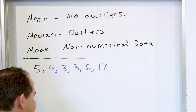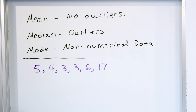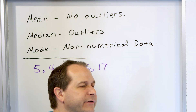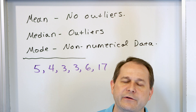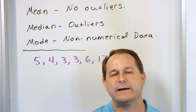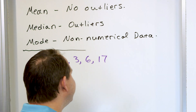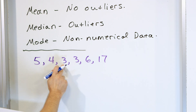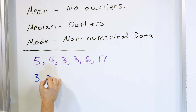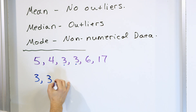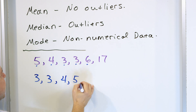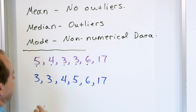Now, generally, you can say this data could be representing anything — this could be the age of kids when they learn how to ride a bike. If you want to figure out whether you should use the mean, median, or mode, the first step: always write the data from smallest to largest. The smallest number in this data set is three, followed by another three. Then we have a four, then a five, a six, and a 17.